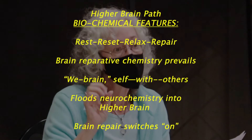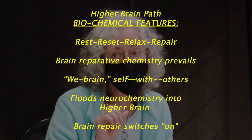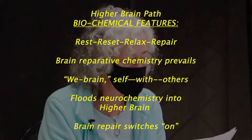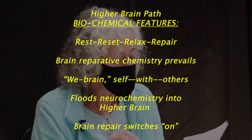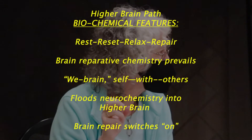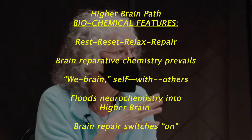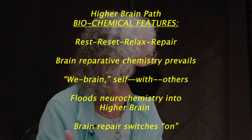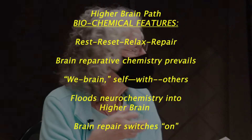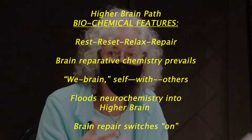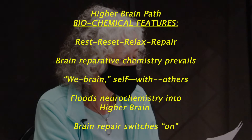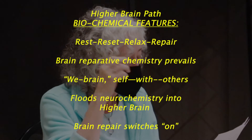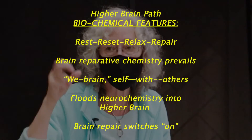Brain repair chemistry — rest, reset, relax, and repair — turns on in the higher brain path, and that probably needs to happen at a five-to-one ratio, especially under excessive stress. The 'we brain' kicks in instead of the 'me brain.' We can be with ourselves and with others, check in with others, and neurochemistry floods into the higher brain. Brain repair switches on.